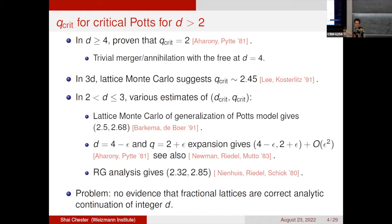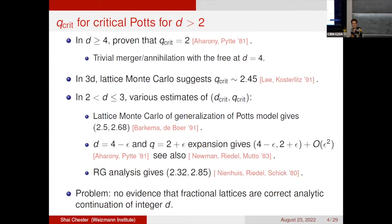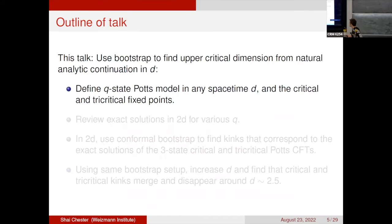The continuation to fractional d is not unique — one can do it in many ways. These were proposals people made, but they might not be the correct ones. There was no compelling reason why those were unique ways of going to real d. This motivates the present approach: using the bootstrap to find the upper critical dimension from a natural analytic continuation in d.